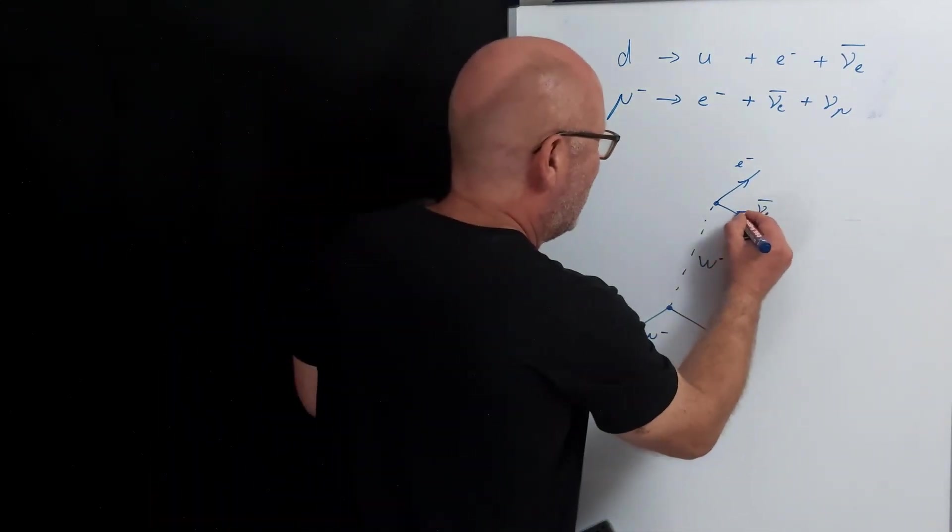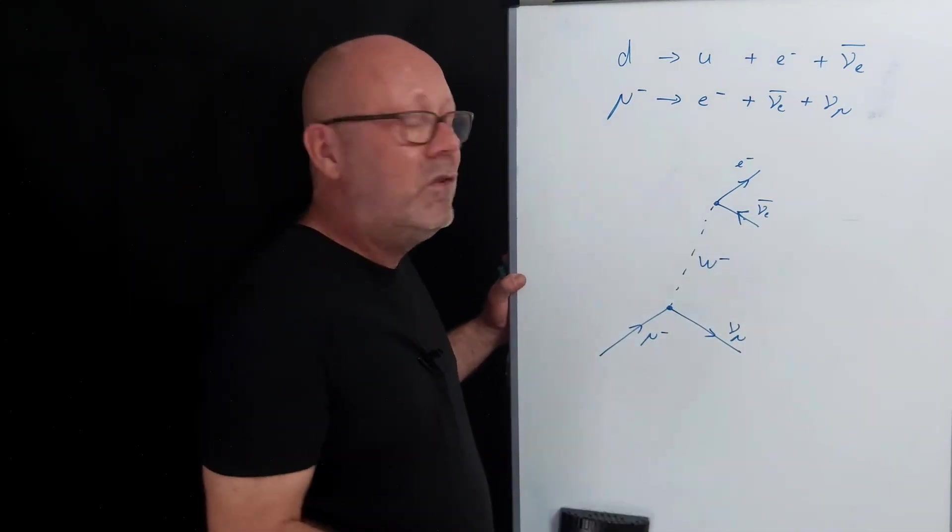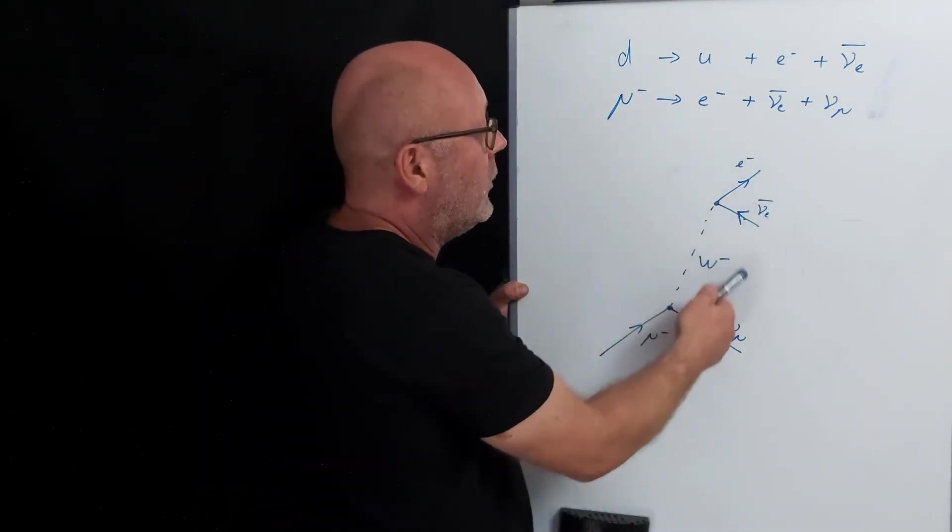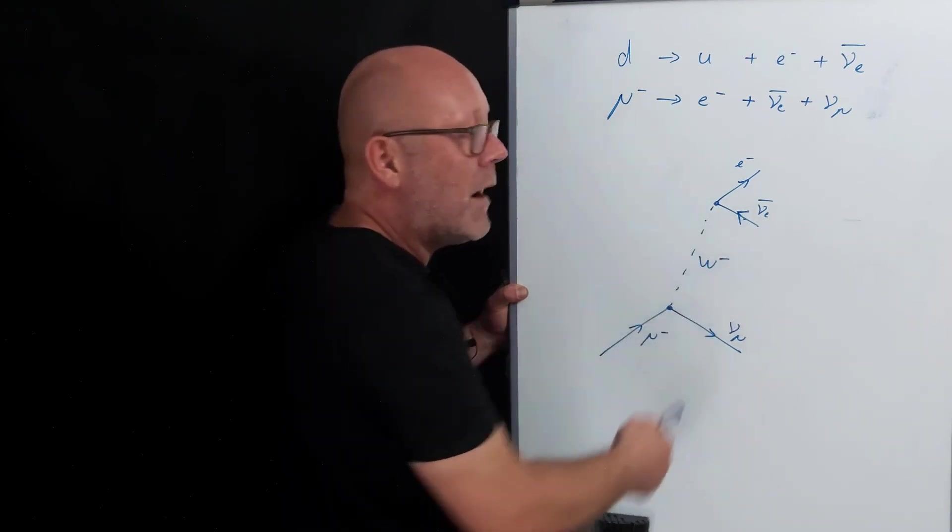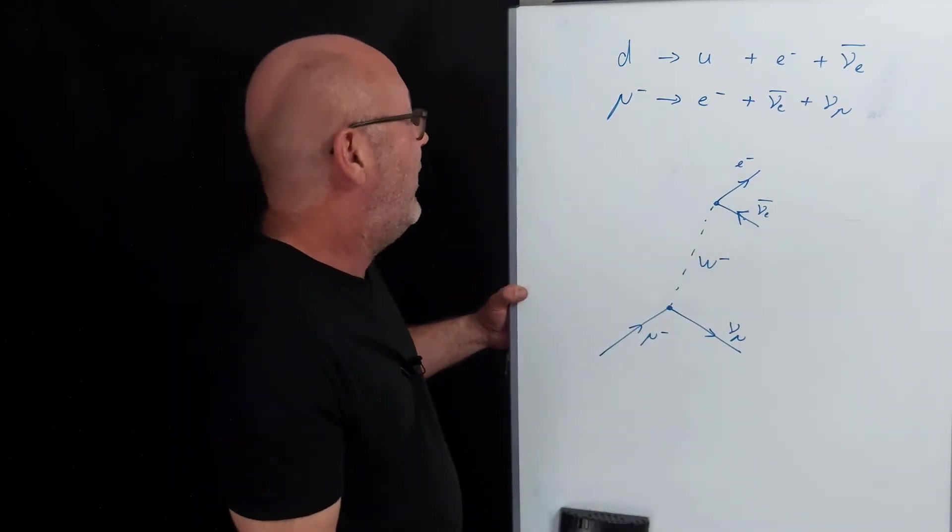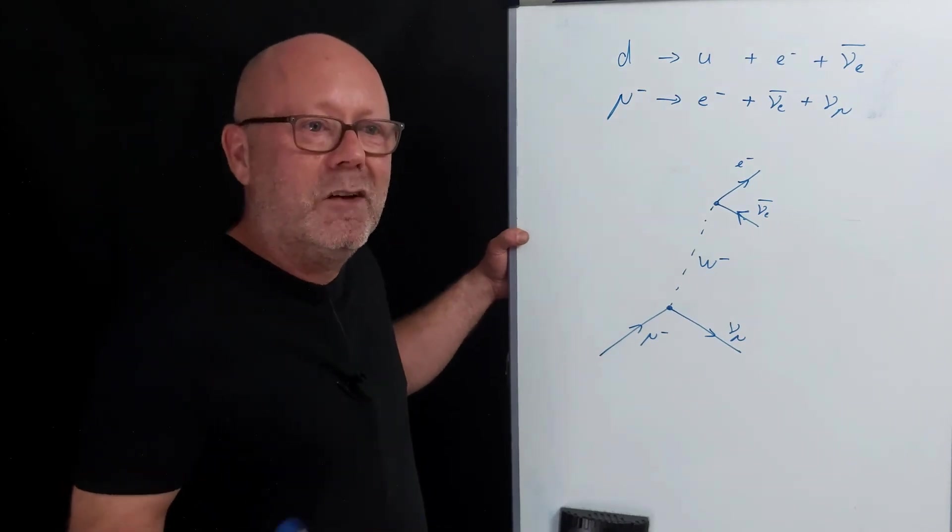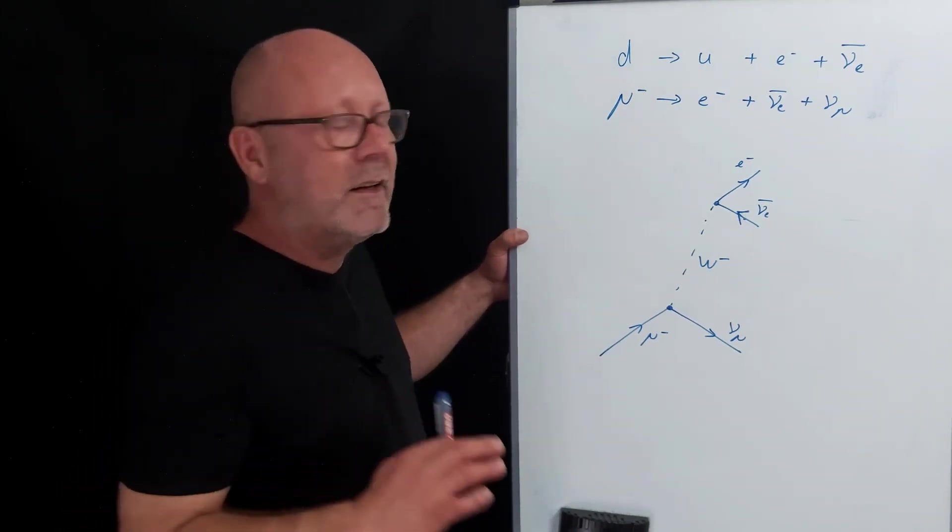I should put my arrows a bit better. We can deduce easily that it's the electron and the electronic anti-neutrino that come from the decay of the W-. It makes sense. But we can still check it using quantum number conservation, just as an exercise.